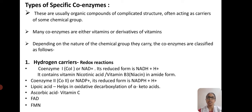Coenzyme 1 (Co1), also called NAD⁺, is a hydrogen carrier. Its reduced form is NADH + H⁺. It contains the vitamin derivative nicotinic acid, also called vitamin B3 or niacin, in amide form. So nicotinic acid is the chemical name of vitamin B3, niacin, and this vitamin derivative helps in enzymatic activity.